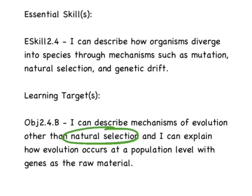Natural selection explains how organisms adapt over time to their environments and how variations can give rise to adaptations within species. However, natural selection is not the only mechanism of evolution. By studying population genetics, we have learned more about evolutionary theory. We need to understand how evolution occurs at the population level, meaning with lots of organisms, with the genes as the raw material — meaning that genetic variation is needed in a population for evolution to take place.